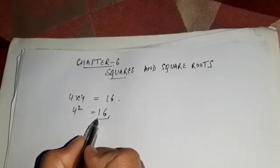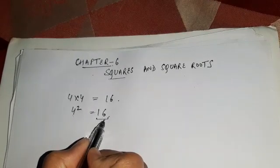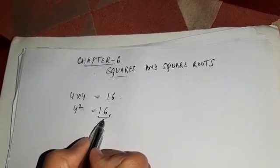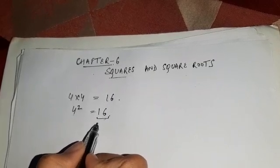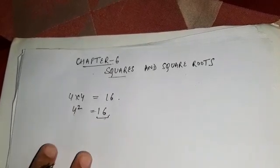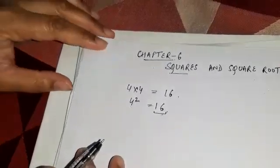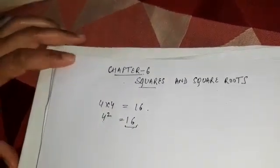This 16 is called a square number. All the numbers which can be written in the form of a perfect square, these numbers are called perfect squares. These numbers are called square numbers.